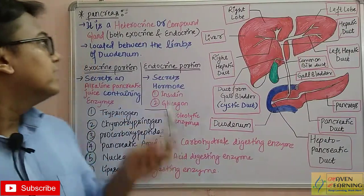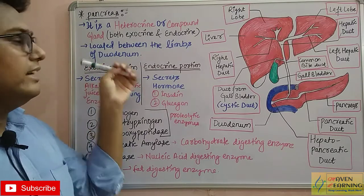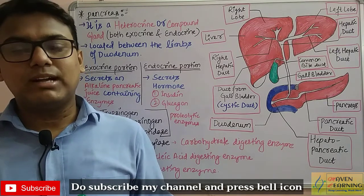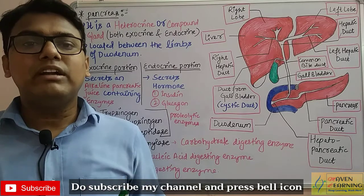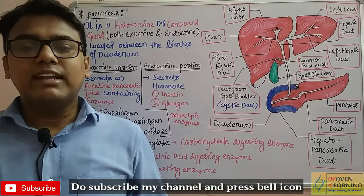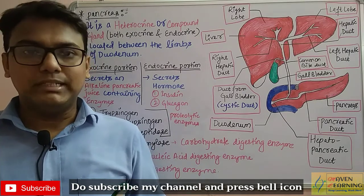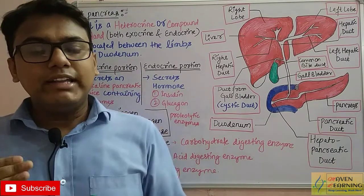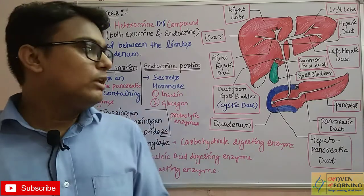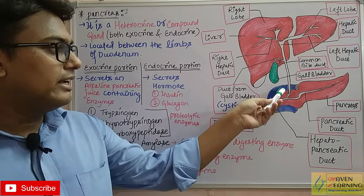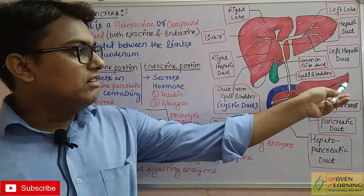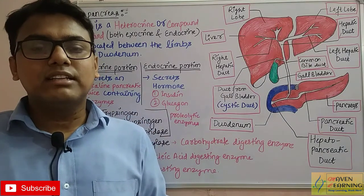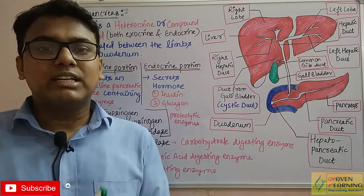The next gland is the pancreas. It is a heterocrine or compound gland — meaning different portions of the gland perform different functions: one portion is exocrine and one is endocrine. The pancreas is located between the limbs of the duodenum. As you can see in the diagram, the leaf-like structure between the duodenal limbs is the pancreas.